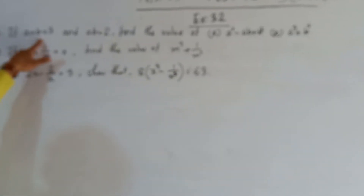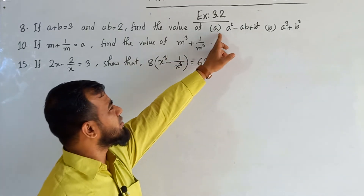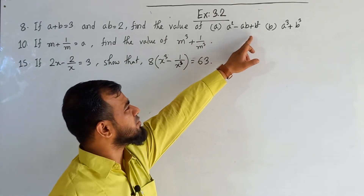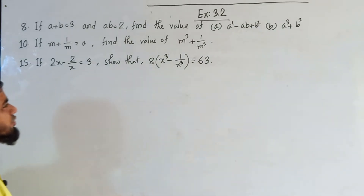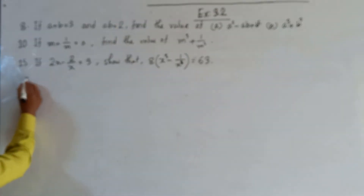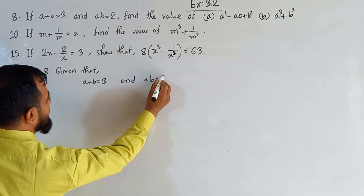If A plus B is equal to 3 and AB is equal to 2, find the value of: activity A is A squared minus AB plus B squared, and activity B is A cubed plus B cubed. These two values need to find out. So the solution of question number 8 — first of all you should write down given that: A plus B equals 3 and AB equals 2.